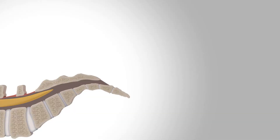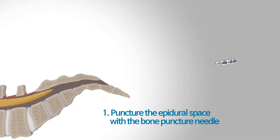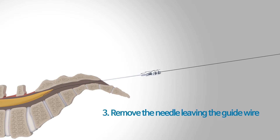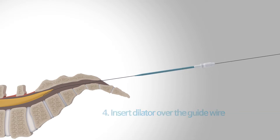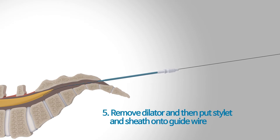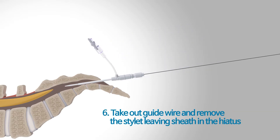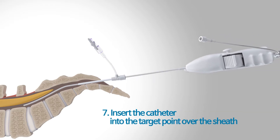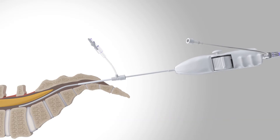Let's review again how to approach the target point: puncture the epidural space with the bone puncture needle; insert guide wire into the hiatus; remove the needle leaving the guide wire; insert dilator over the guide wire; remove dilator, then put stylet and sheath onto guide wire; take out guide wire and remove the stylet, leaving sheath in the hiatus; insert the catheter into the target point over the sheath. This approach is the core of SELD.